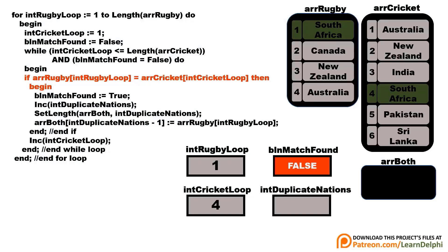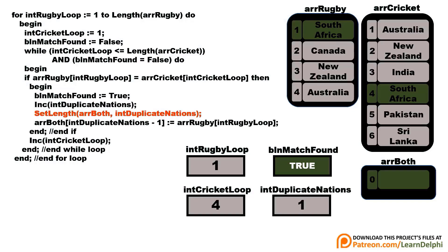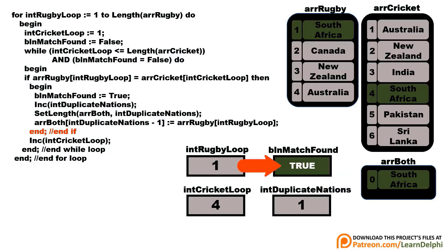South Africa is in both arrays, so now the boolean is set to true. The variable that determines the size of the dynamic array increases to 1. The dynamic array is sized and gets a new element, and South Africa is added to the third array. Notice this array's first index is 0, not 1 — the dynamic array is zero-based as learned in the last lesson. Whenever the flag is true, the inner loop doesn't need to look further — the rest of the elements are ignored and the cricket loop exits.